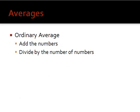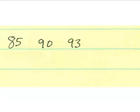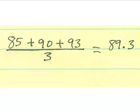To find an average, an ordinary average, all you do is you add the numbers and then divide by how many numbers there were. So, for example, if you have 85, 90, and 93, and you want to find the average of those three numbers, just add them up and then divide by how many there were, and then you get the answer.